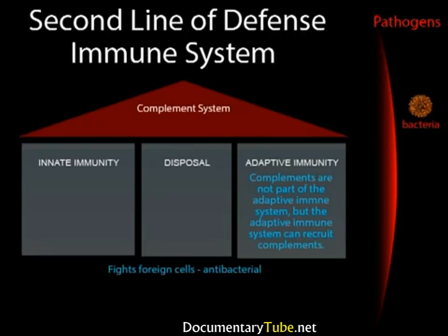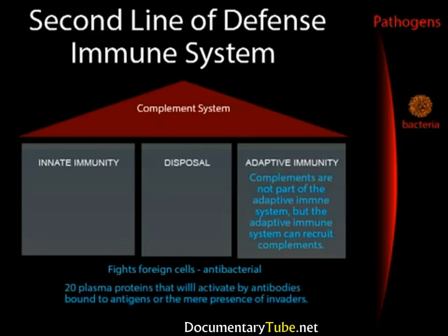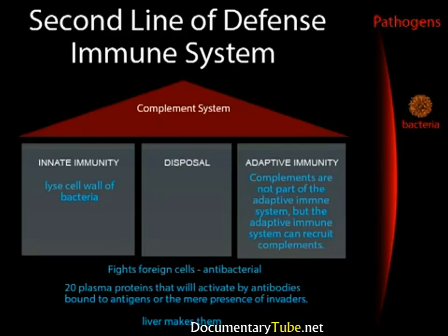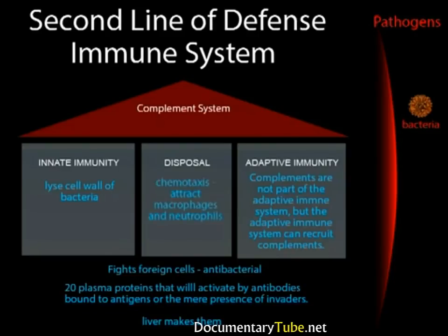Complements are involved in fighting foreign cells, which are generally bacteria. The complement system is made up of 20 plasma proteins made by the liver and released into the bloodstream. Like blood coagulation factors, these proteins stay inactive in the blood serum until something activates them—either the foreign invader itself or the presence of antibodies bound to antigens. They can lyse bacteria by combining to form a hole in the plasma membrane of foreign cells, causing their components to leak out and killing them. They can also attract phagocytotic cells, which then destroy the bacteria by eating them.